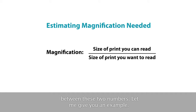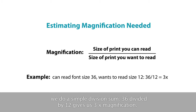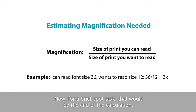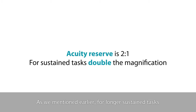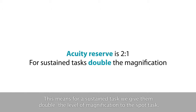Here's an example: if the patient can read font size 36 but wants to read size 12, we do a simple division — 36 divided by 12 gives us 3 times magnification. For a brief spot task, this is the end of the calculation. But for a longer sustained task, we need to leave an acuity reserve to reduce fatigue. The amount of acuity reserve is left to the practitioner, but normally we'd leave a reserve of about 2 to 1, meaning we double the magnification level for a sustained task.